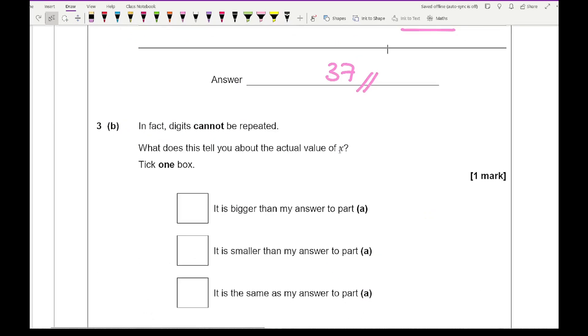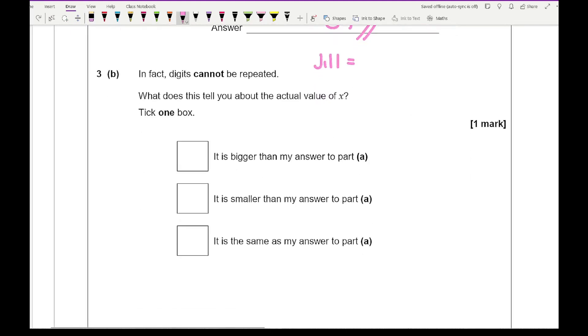It then says, in fact the digits can't be repeated. What does this tell you about the actual value of x? So if I go back to Jill, she had 4 possible numbers she could choose from, so that's going to be picking a 3 digit number of 4 times 3 times 2, which is 24. Michael had 3 numbers, so that's going to be 3 times 2 times 1, and that's going to give me 6. So the difference is therefore going to be 18, and that's less, so the answer then will be smaller.